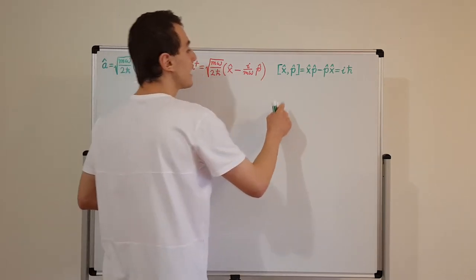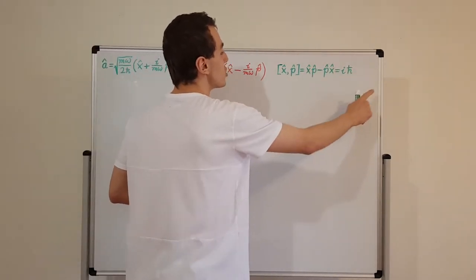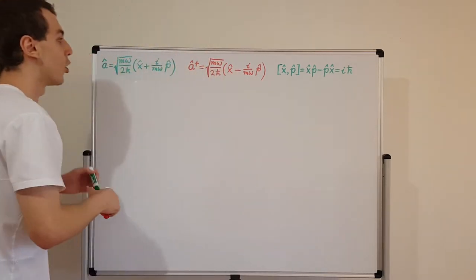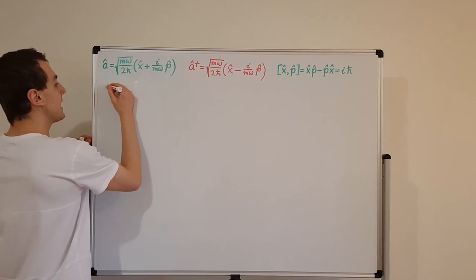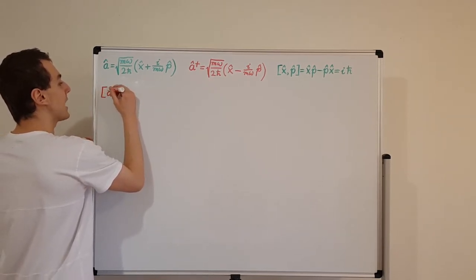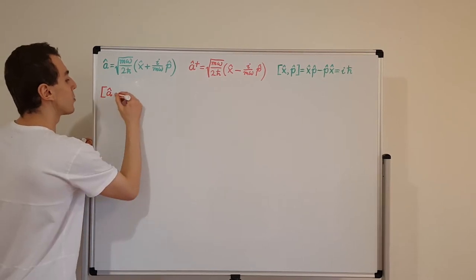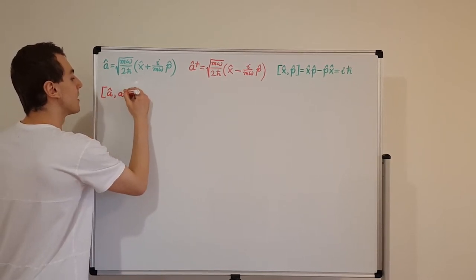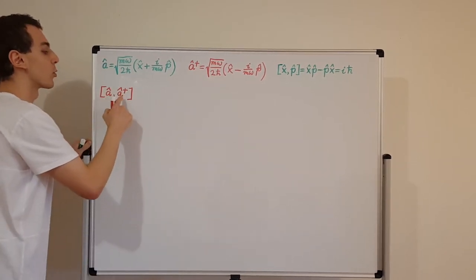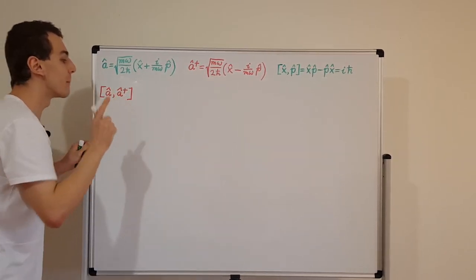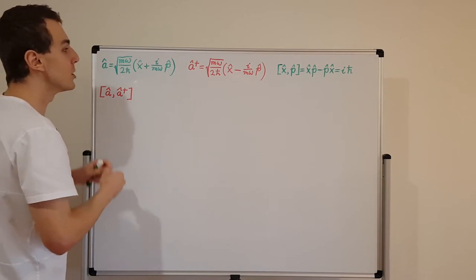We're going to prove something interesting in this video, analogous to that relationship. We're going to find the commutator of these two operators: a hat commuted with a dagger, in this specific order. Remember that the order matters — these operators are not necessarily commutative.